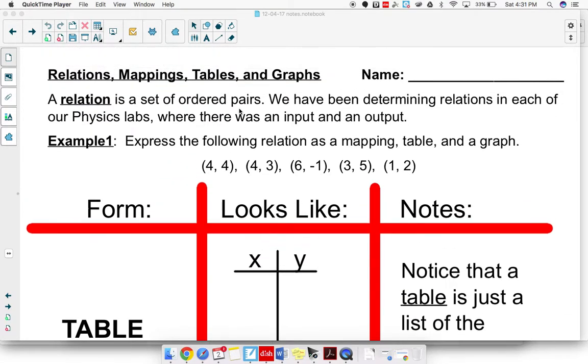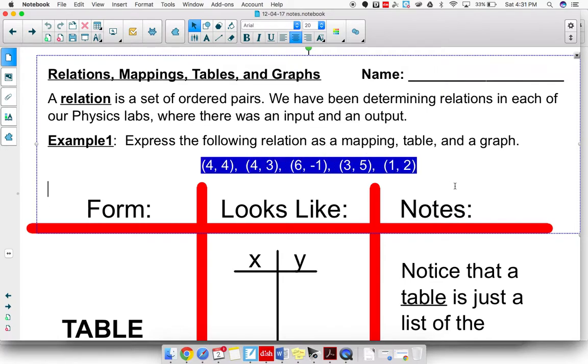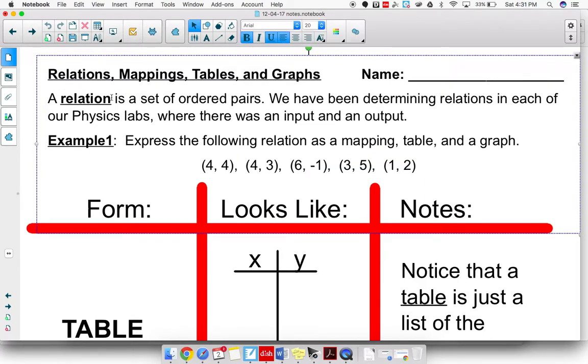So first things first, we've been calling these items right here that I'm going to highlight, we've been calling these pretty much ordered pairs all year long, which they definitely are. Another kind of fancy mathematical word for that is a relation. And so when we talk about relations, we're really talking about data sets. And generally speaking, with our relation, we're going to have an X and a Y or an input and an output.